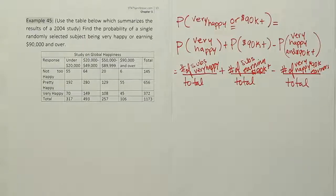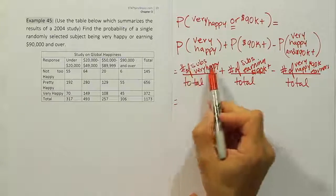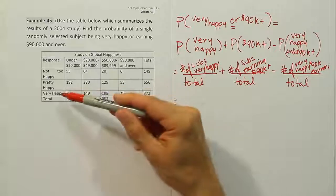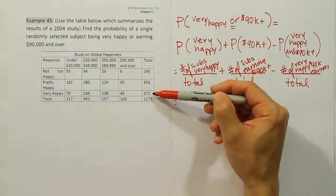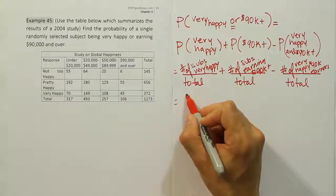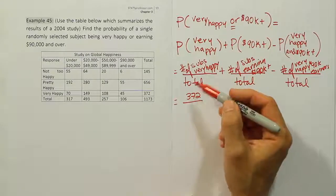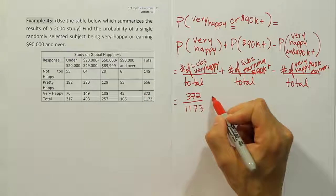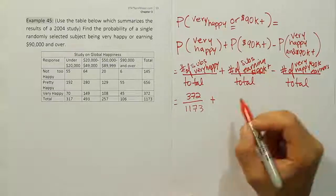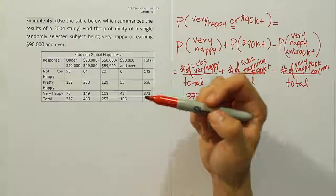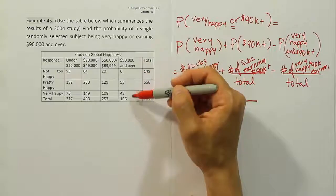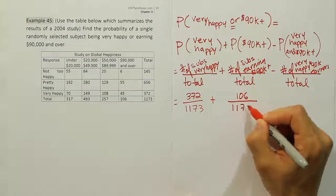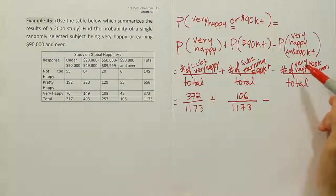We have a clear roadmap of what goes where. The number of subjects who are very happy — I find the very happy row and go to the total for that group: 372 people. The total number of people in the study is the grand total: 1173. Plus the number of subjects earning 90,000 or more per year: a total of 106, over the grand total 1173.